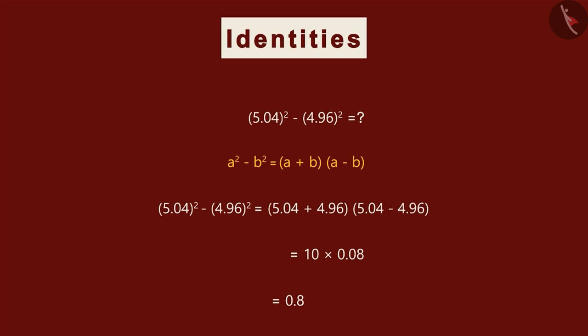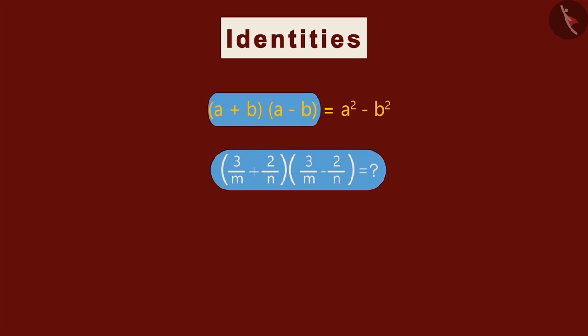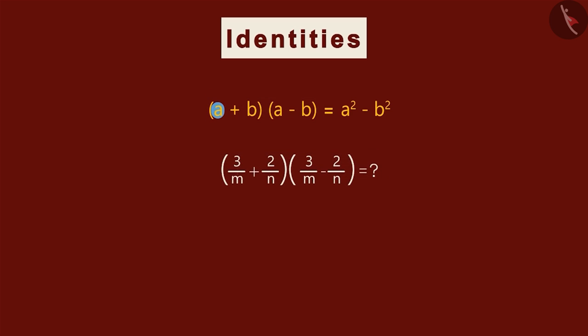Let us look at the next example. Can you find the answer to this? We can see that this expression is in this form. Here, a is 3 by m and b is 2 by n.